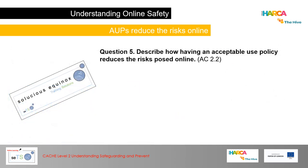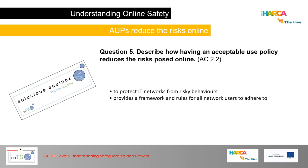Question 5 asks you to describe how having an acceptable use policy reduces the risks posed online. Key points: it protects IT networks from risky behaviours, provides a framework and rules for all network users to adhere to, and ensures prevention of inadvertently uploading malware or spyware. Remember, the key action verb here is 'describe'.